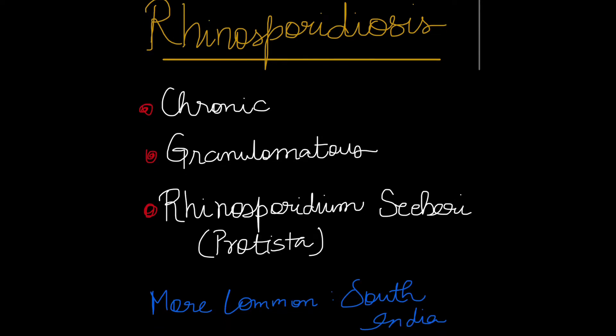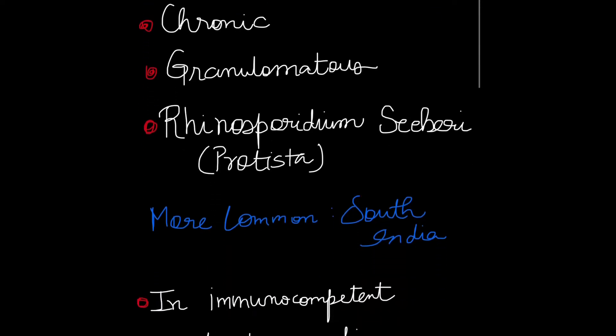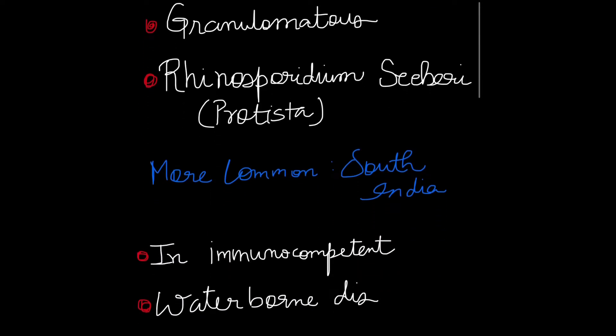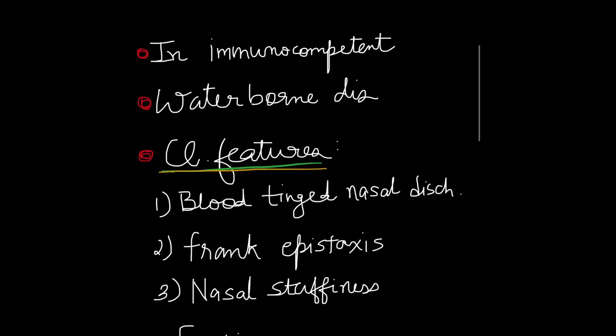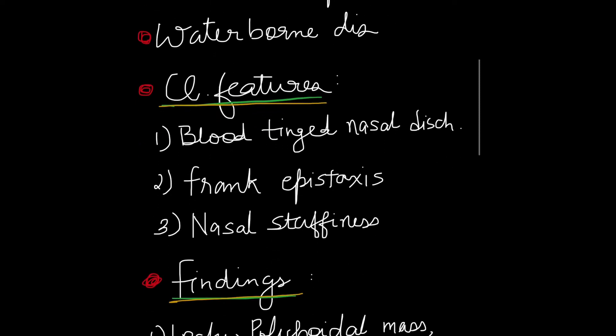It is more common in the southern states of India and it affects immunocompetent individuals. Most commonly this is a waterborne disease. The clinical features are: blood-tinged nasal discharge, frank epistaxis, and nasal stuffiness.